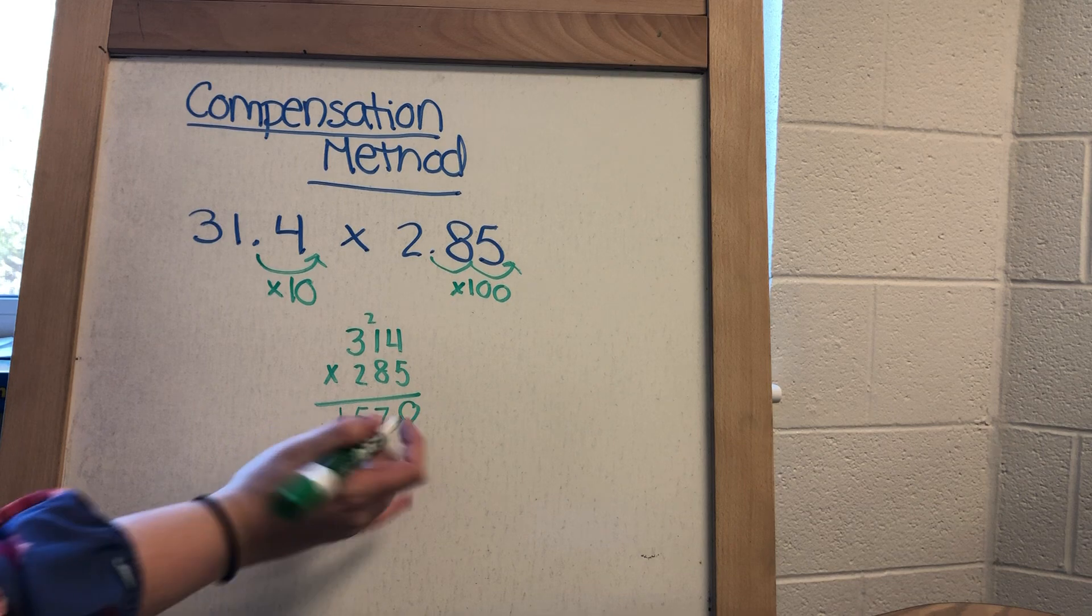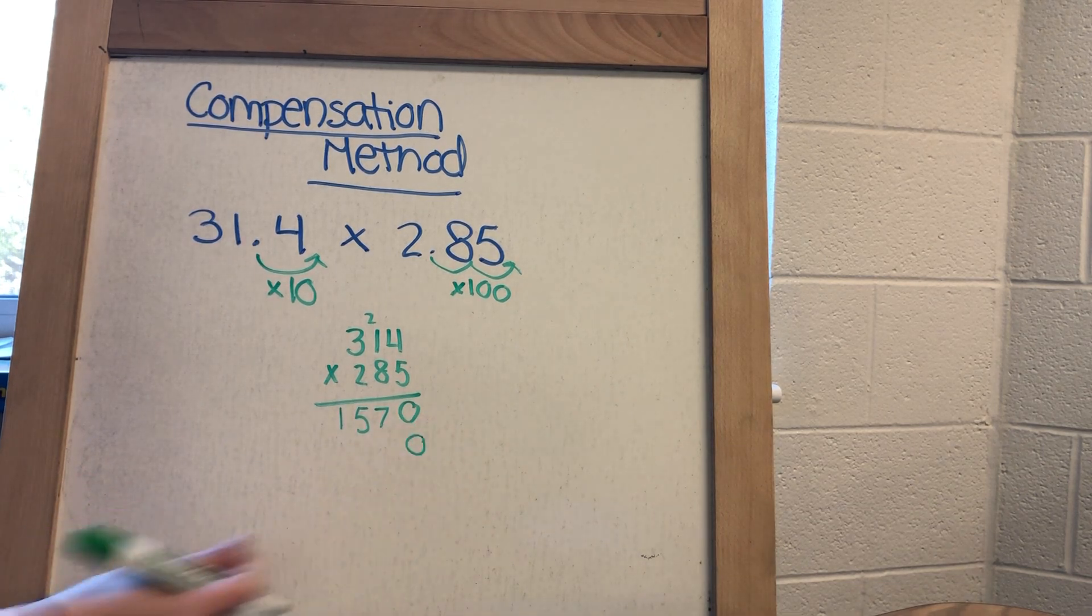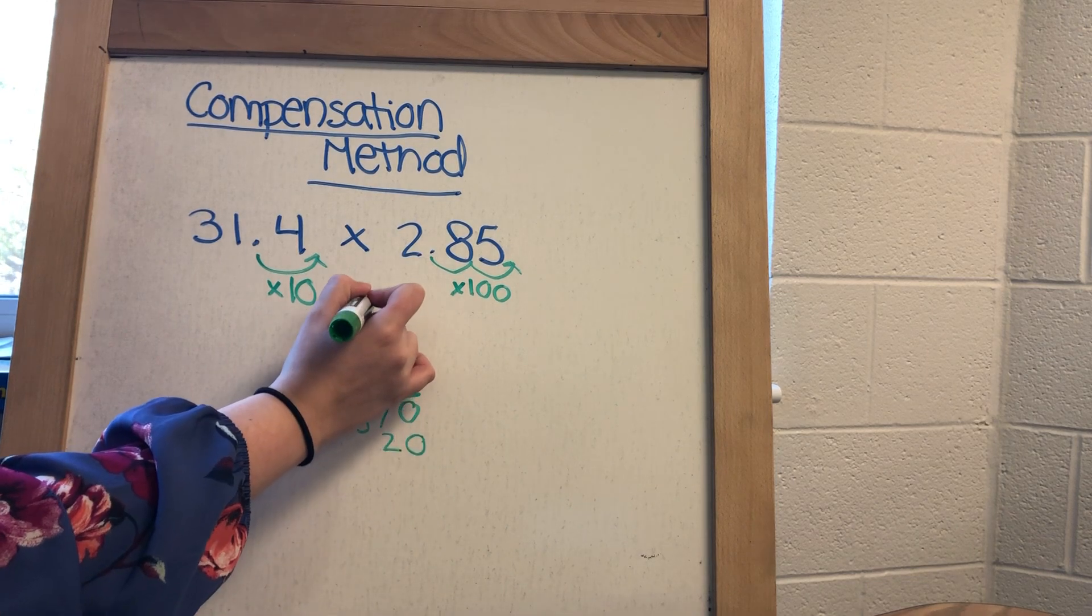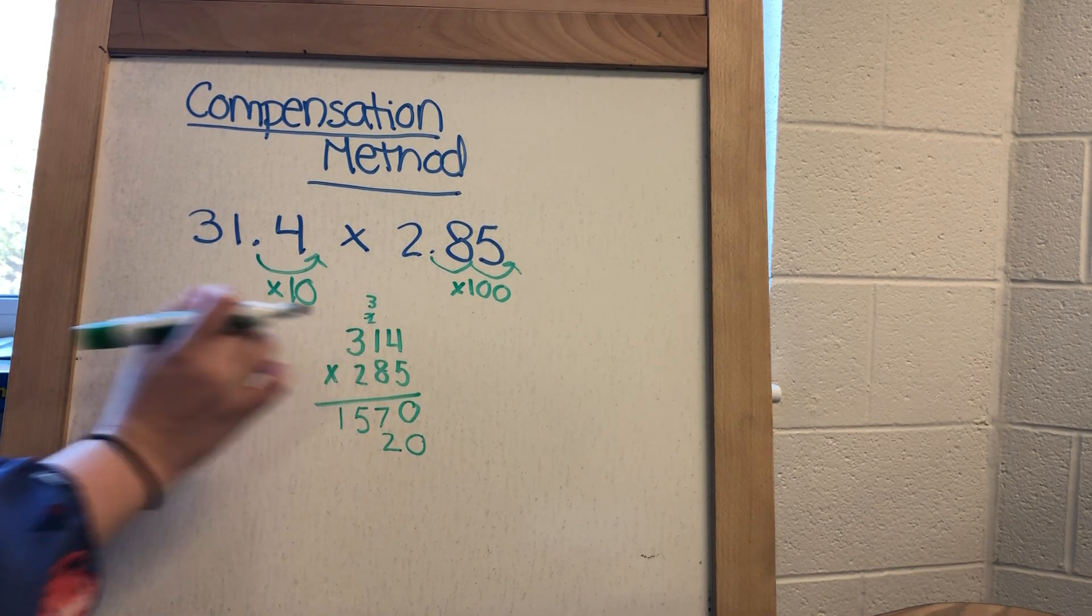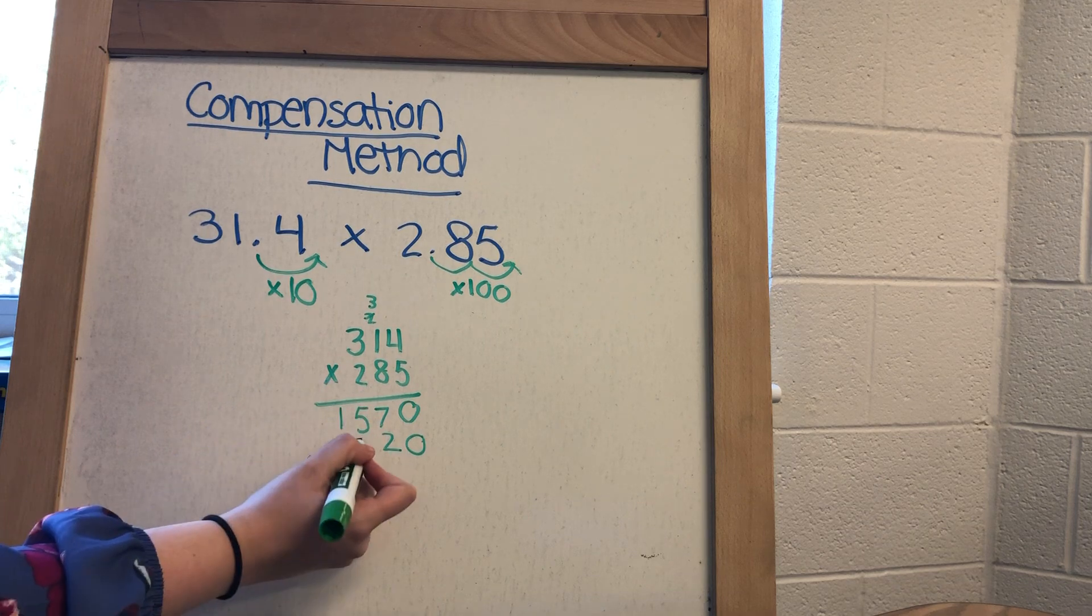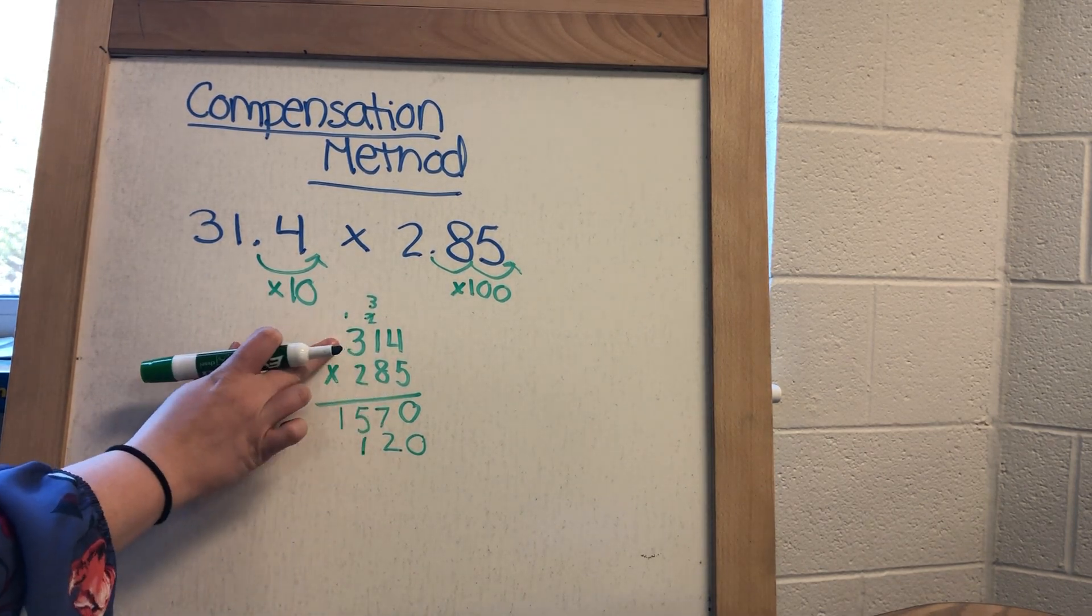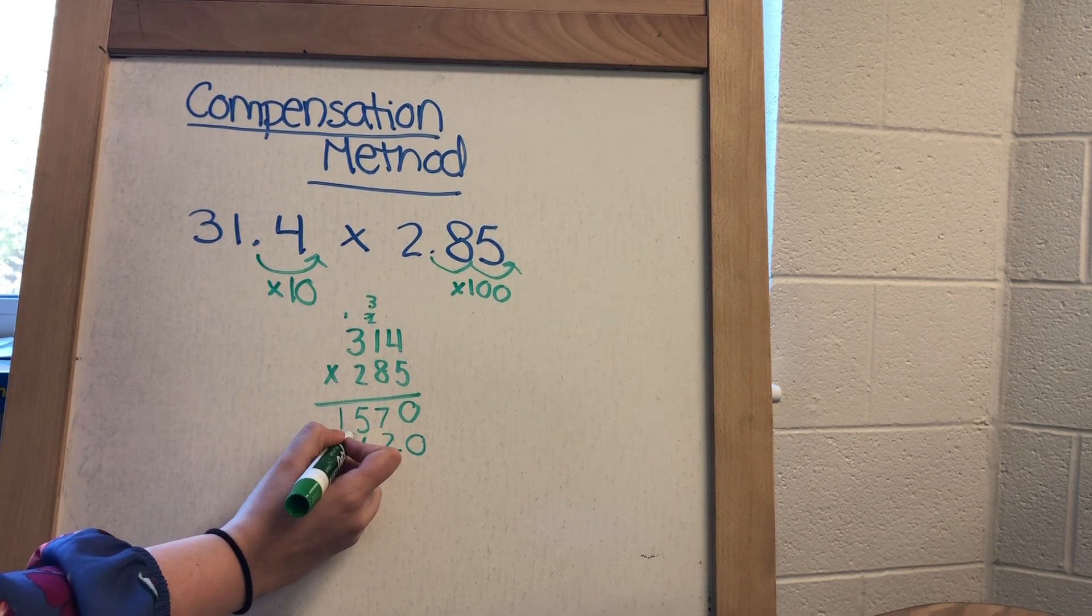So then from here, I'm going to go ahead and put a place value. I have 8 times 4, which is 32. 8 times 1 is 8, plus 3 is 11. 8 times 3 is 24, plus 1 is 25.